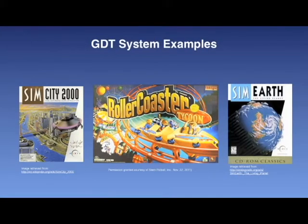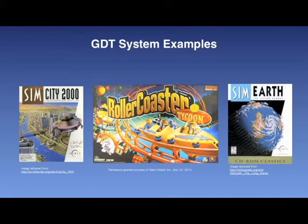Guided discovery tutoring systems are usually presented in a simulation-type computer program. Examples include the commercial products SimCity, SimEarth, and RollerCoaster Tycoon. The learning process to be used is implicit within the system, as are the problems. In SimCity, users are given the task of developing and maintaining a city — a task that is ill-defined and ambiguous. It is up to the learner to determine solutions to the problem, although there are restrictions on how they may proceed; for example, land must be transformed using a bulldozer before any buildings can be built.